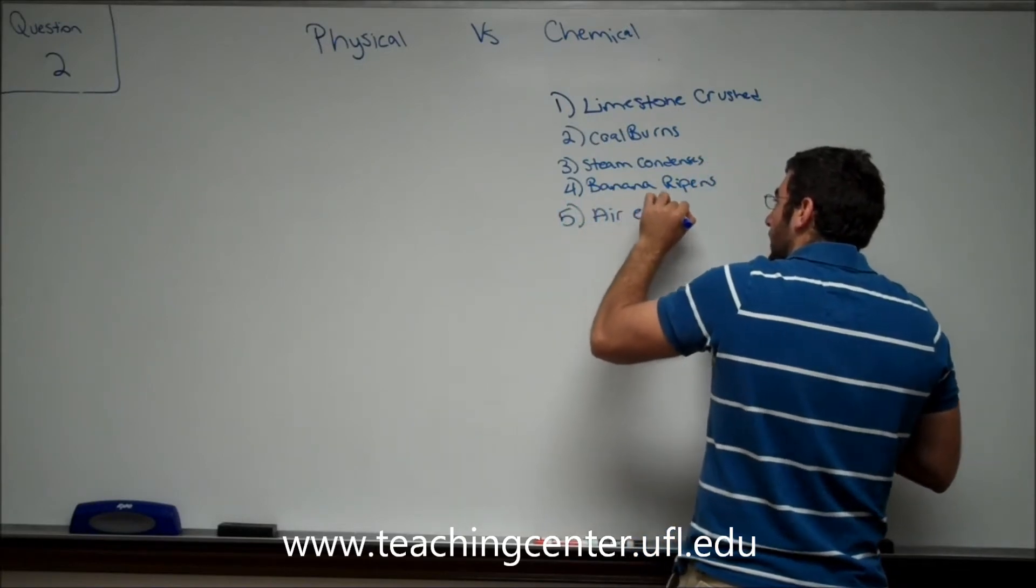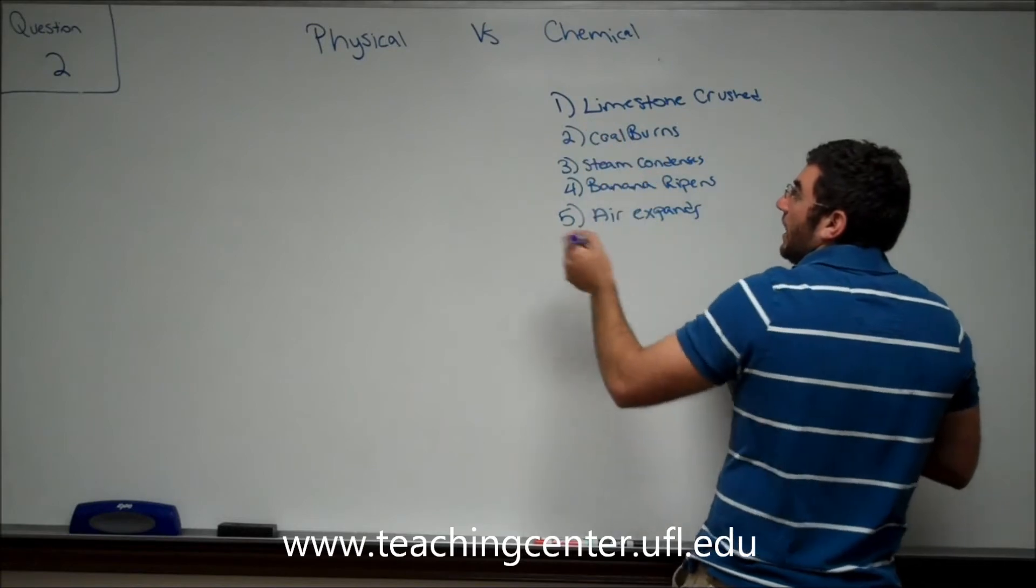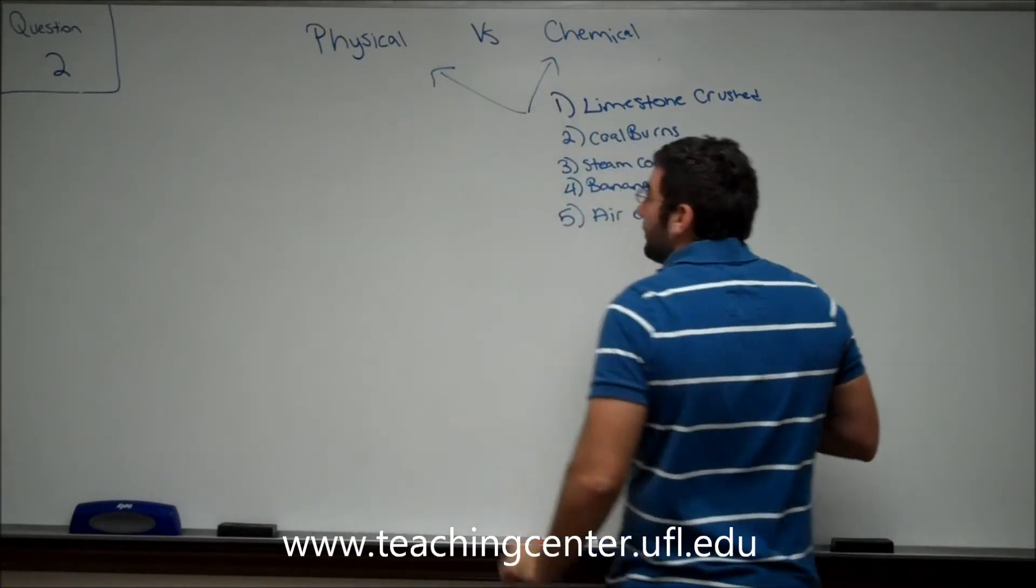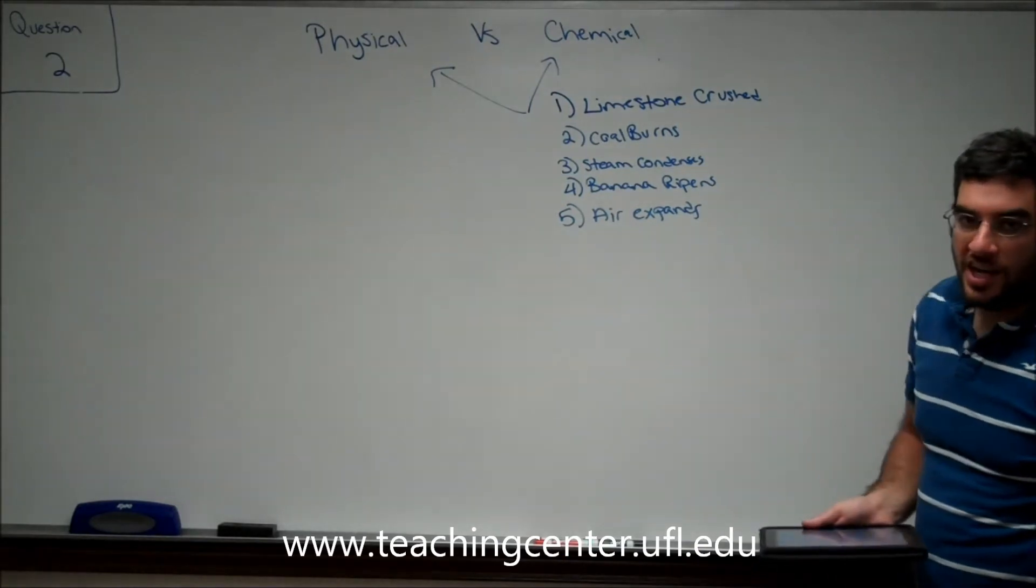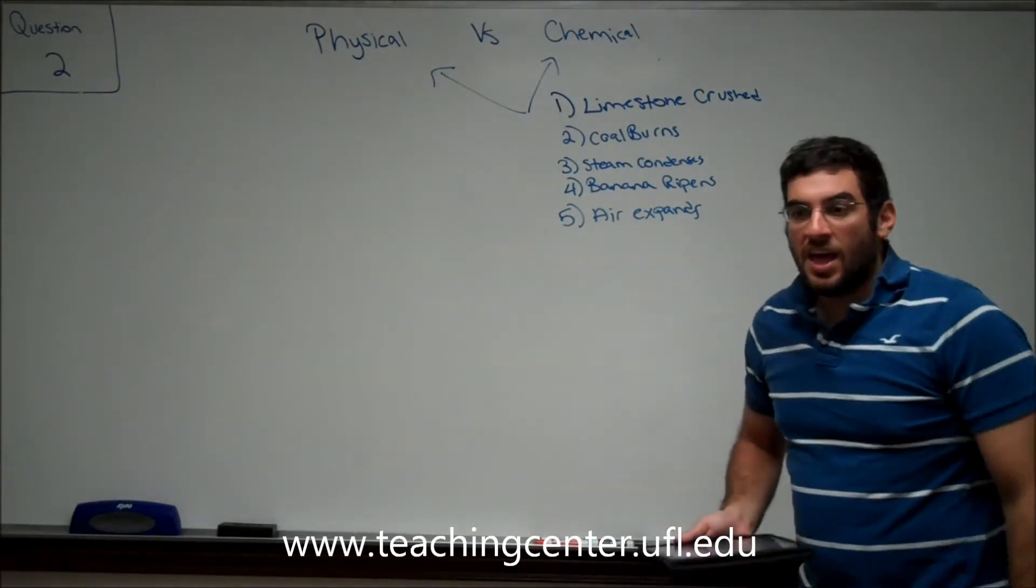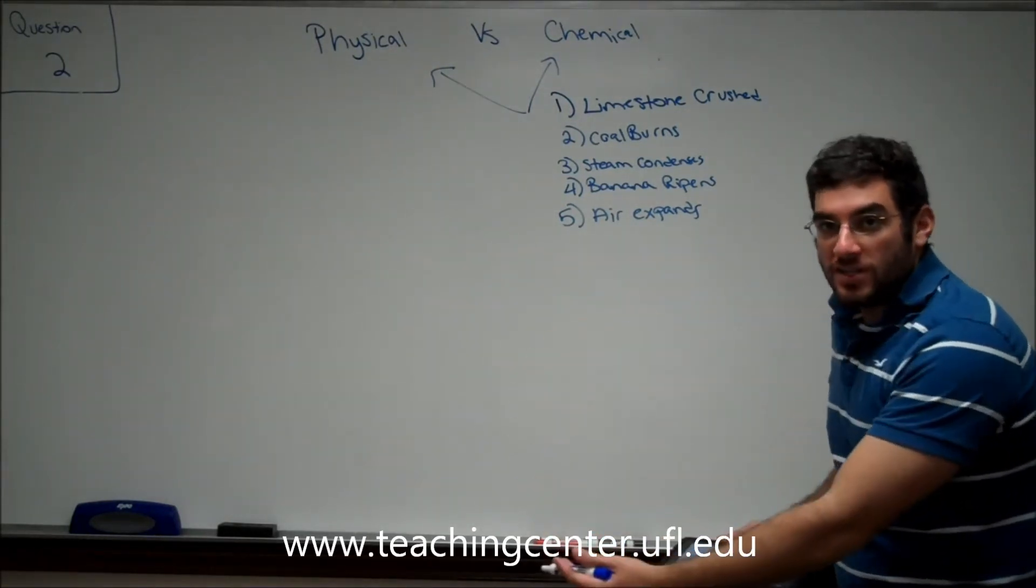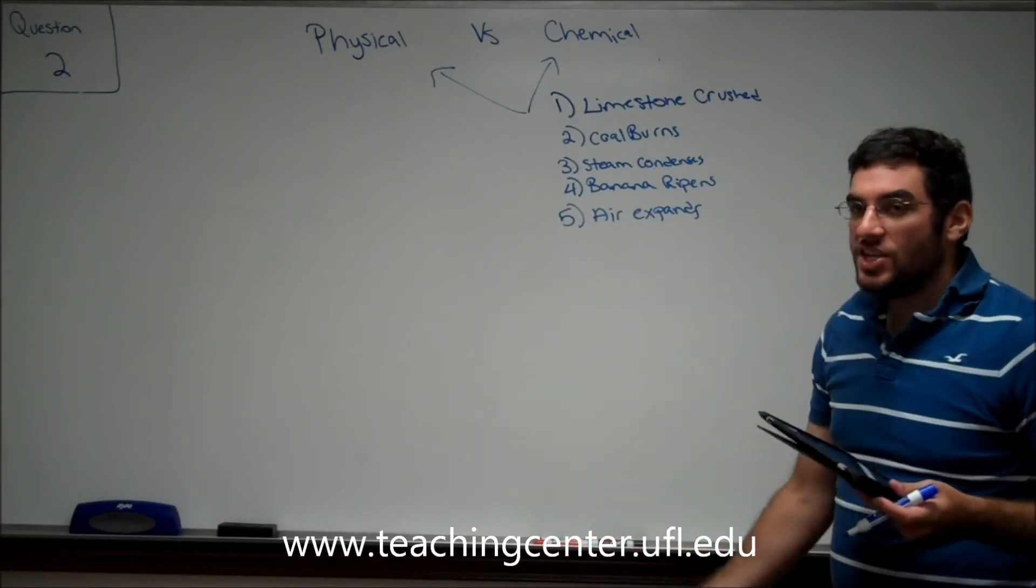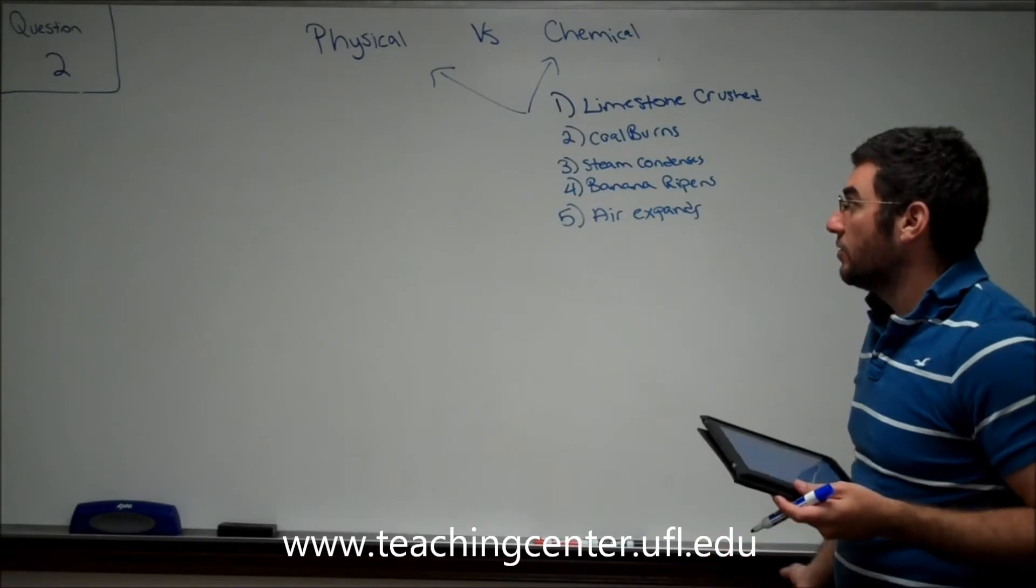So we need to classify each of these five into one of these two categories. A physical change entails anything that you can reverse. A chemical change, once something takes place, you cannot go back to the original one.